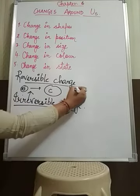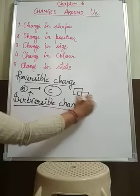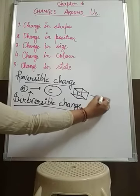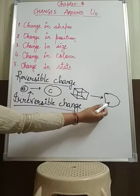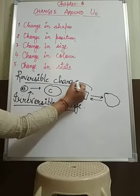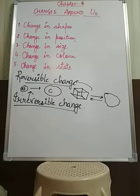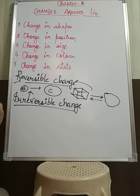Whereas if we take another example — an ice cube converts into water. Can that water convert back into an ice cube? Yes. So it is a reversible change. A change which can be reversed by removing or changing the cause of change is called a reversible change — for example, melting of ice, melting of butter, melting of candle, etc.